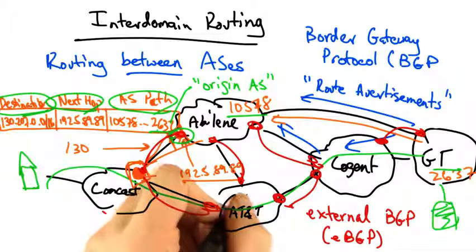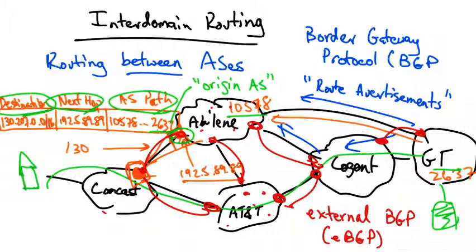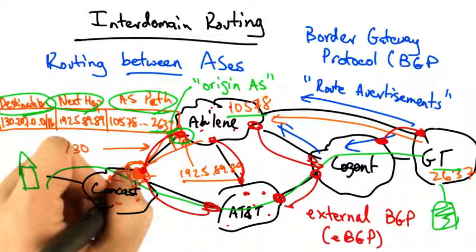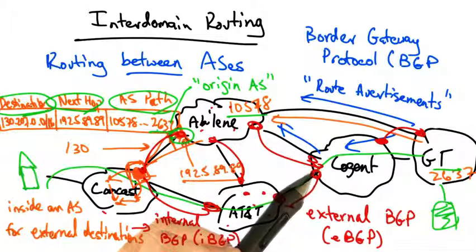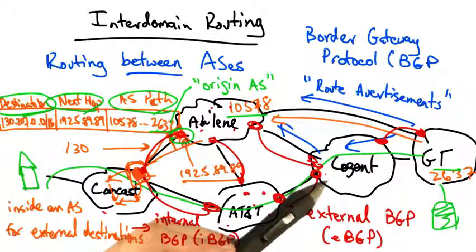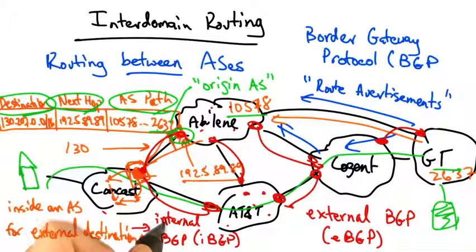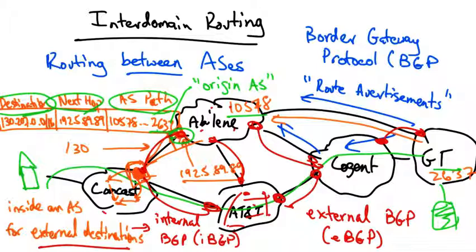But as we know, each one of these autonomous systems has routers of its own inside, and those routers also need to learn routes to external destinations. The protocol used to transmit routes inside an autonomous system for external destinations is called internal BGP, or iBGP. So to review: external BGP is responsible for transmitting routing information between border routers of adjacent ASes about external destinations, and internal BGP is responsible for disseminating BGP route advertisements about external destinations to routers inside any particular AS.